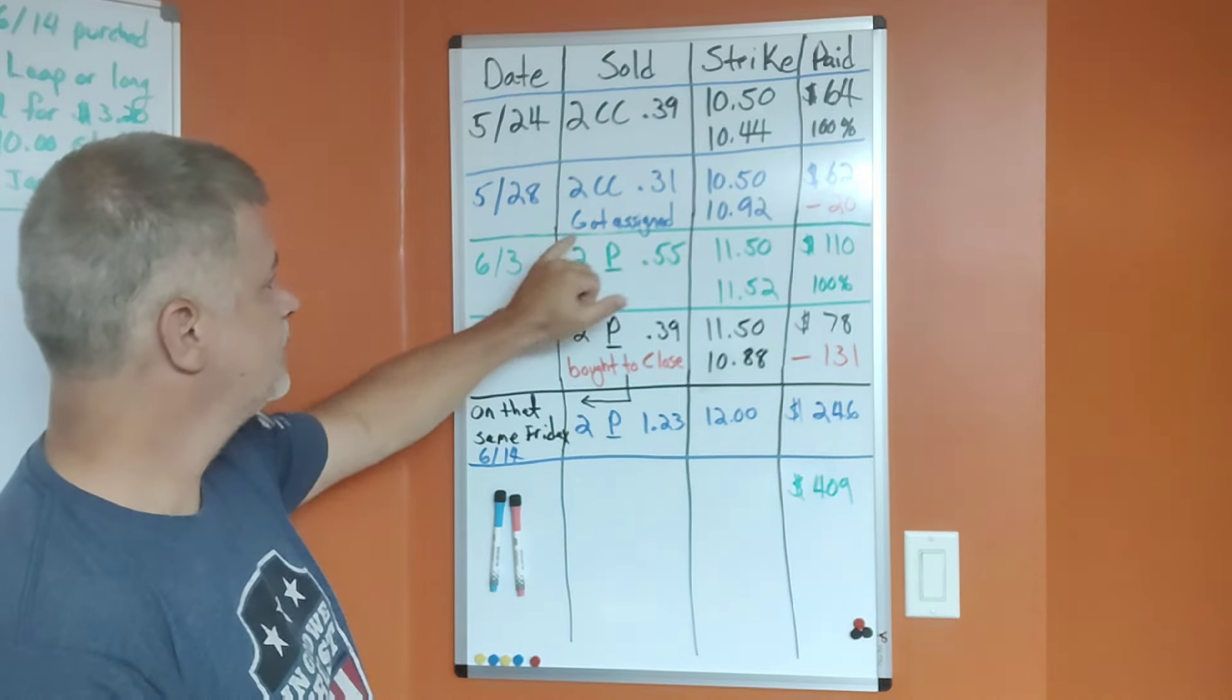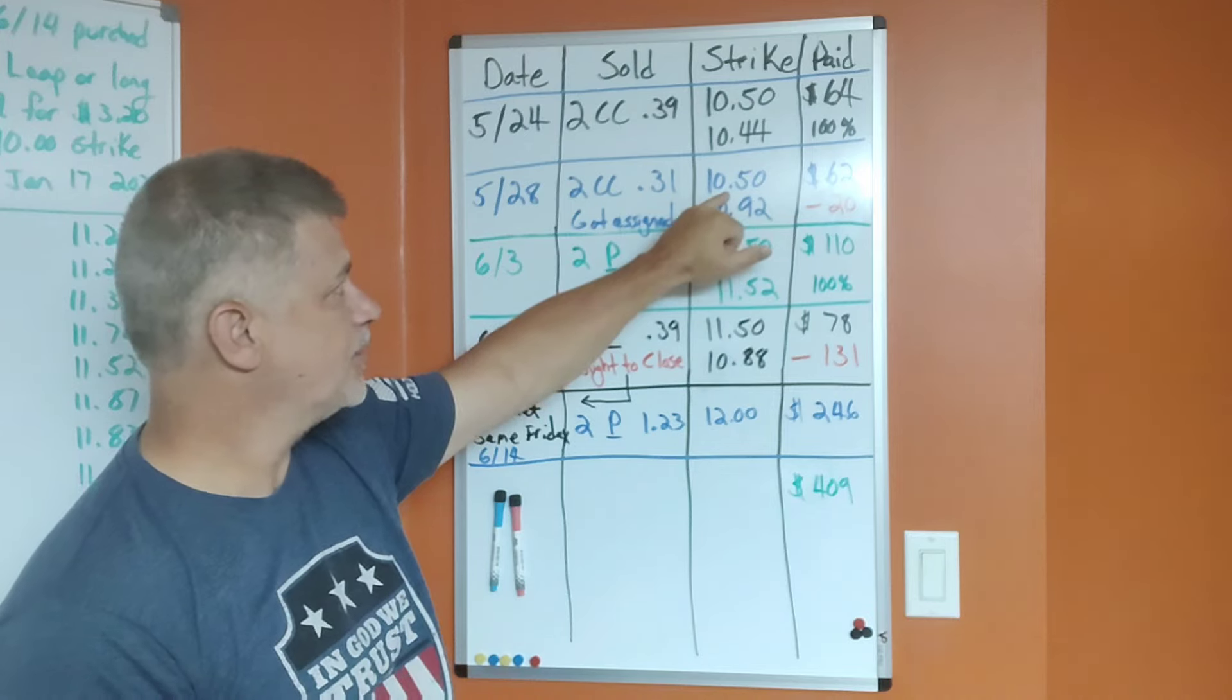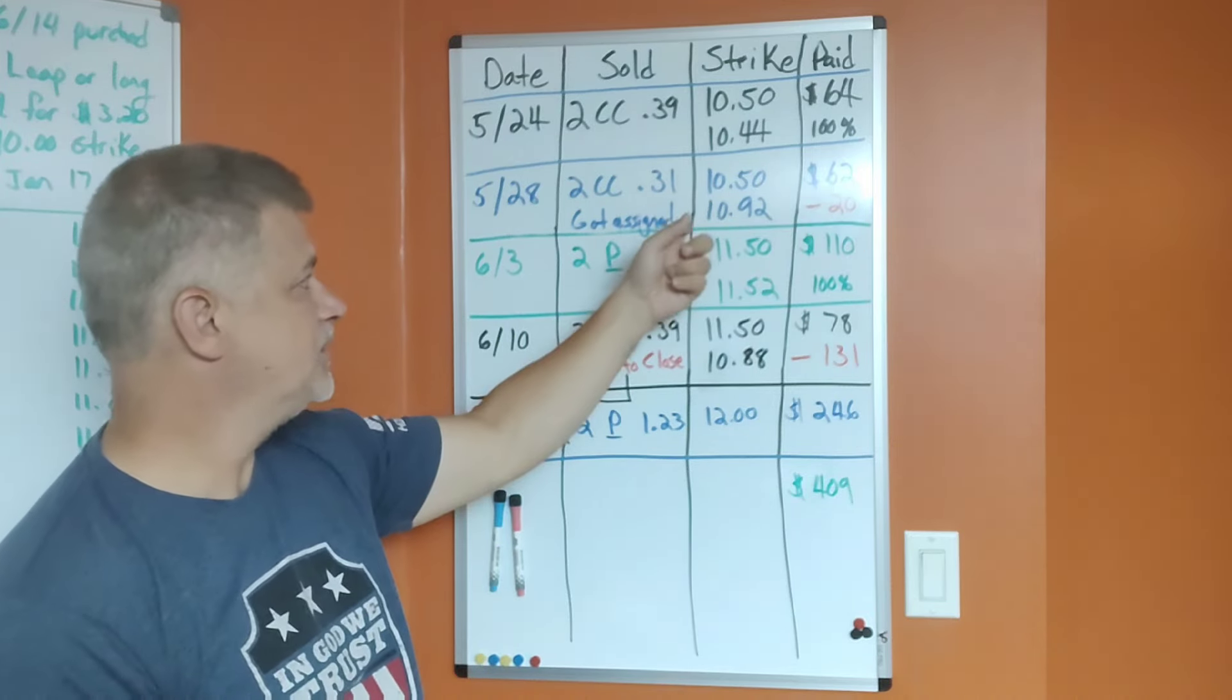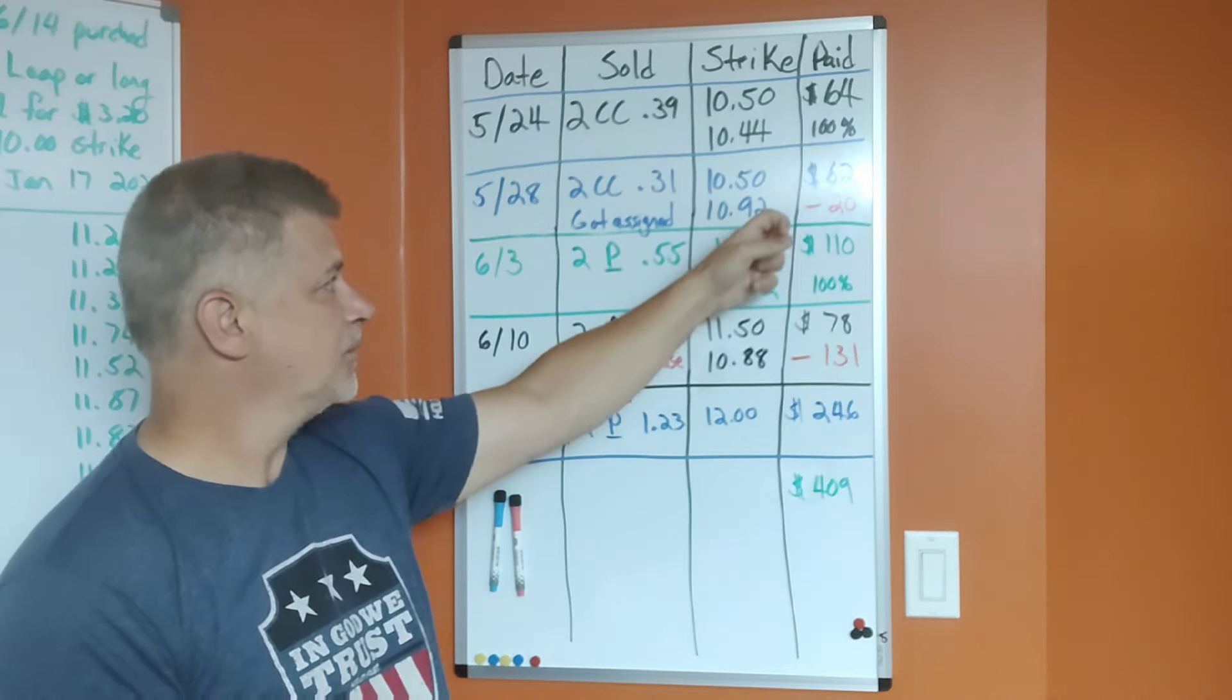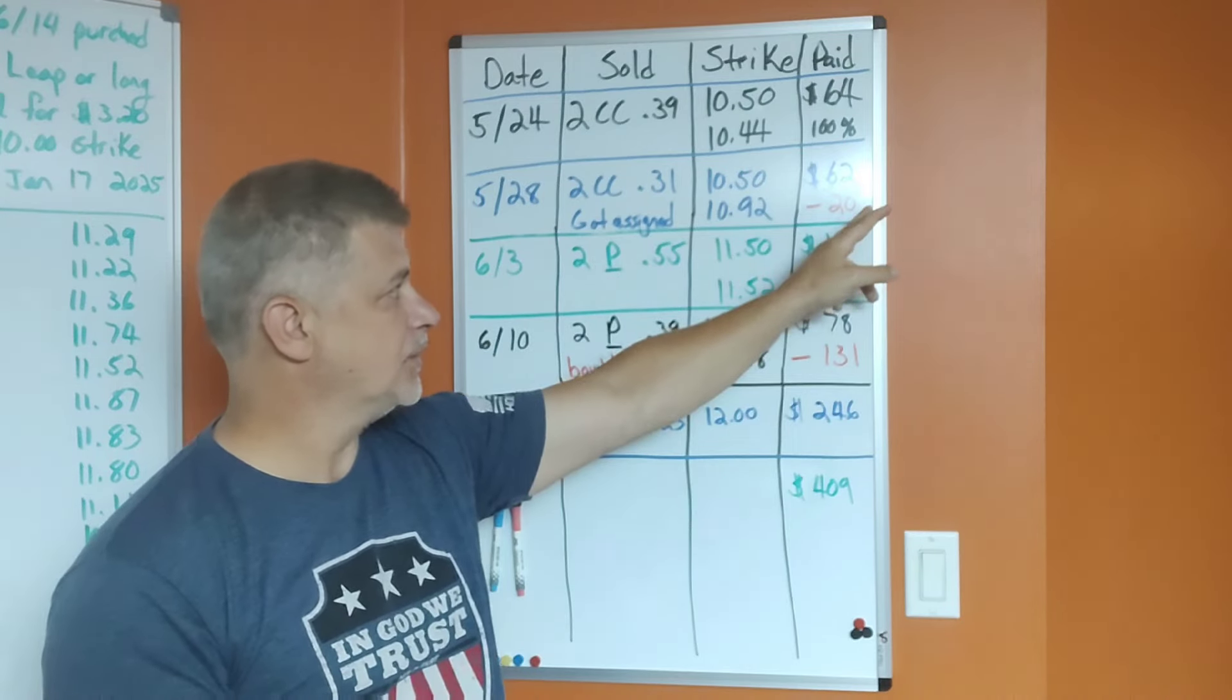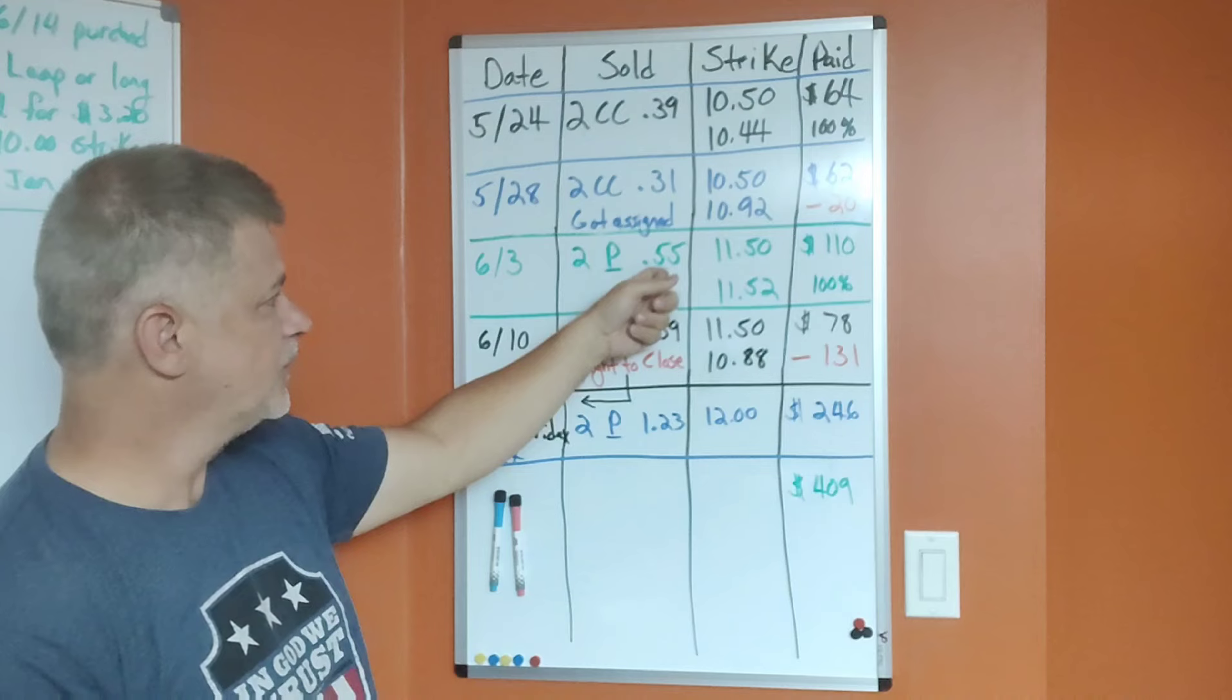On May 28th, I sold two covered calls for $0.31, $10.50 strike price—same strike price—got paid $62. I did get assigned here, and I allowed that to happen because it closed at $10.92. So that was a losing trade; I lost $20 on that trade.